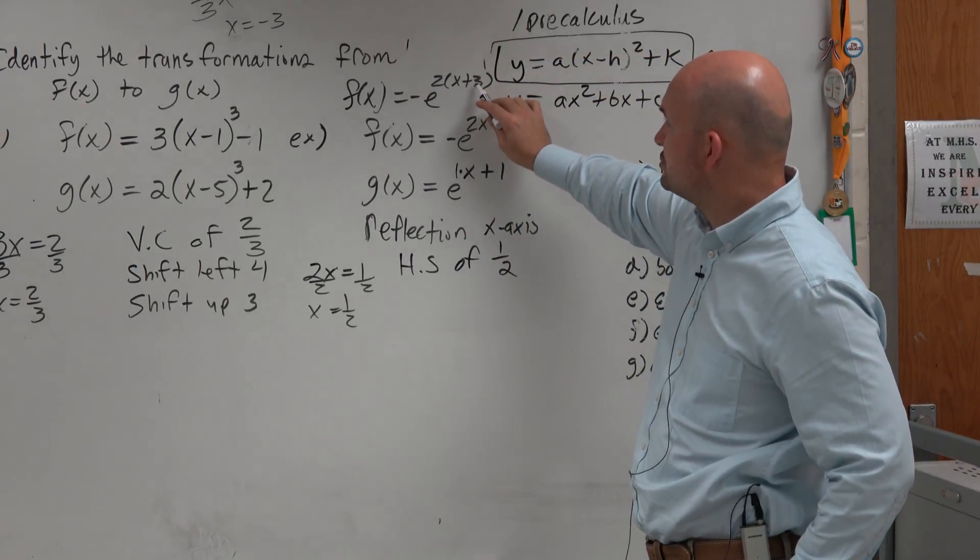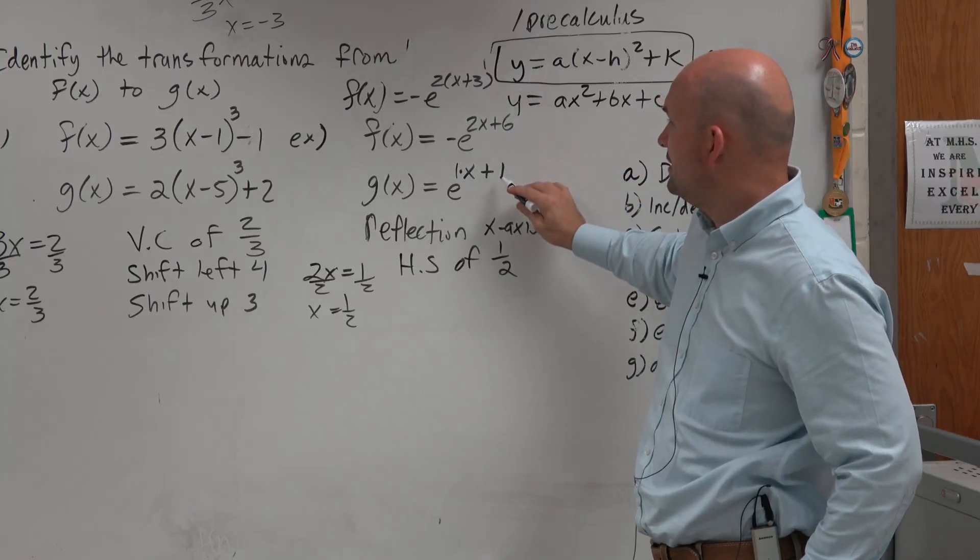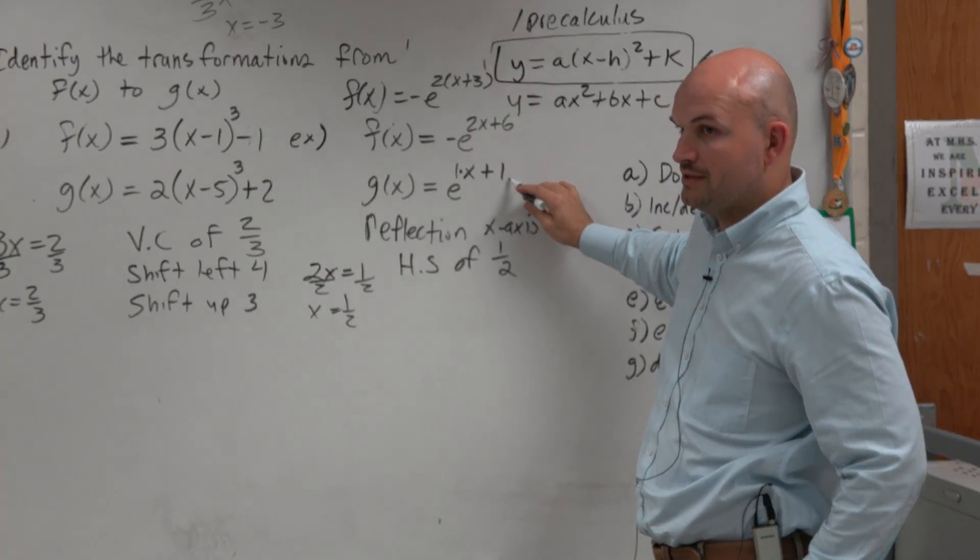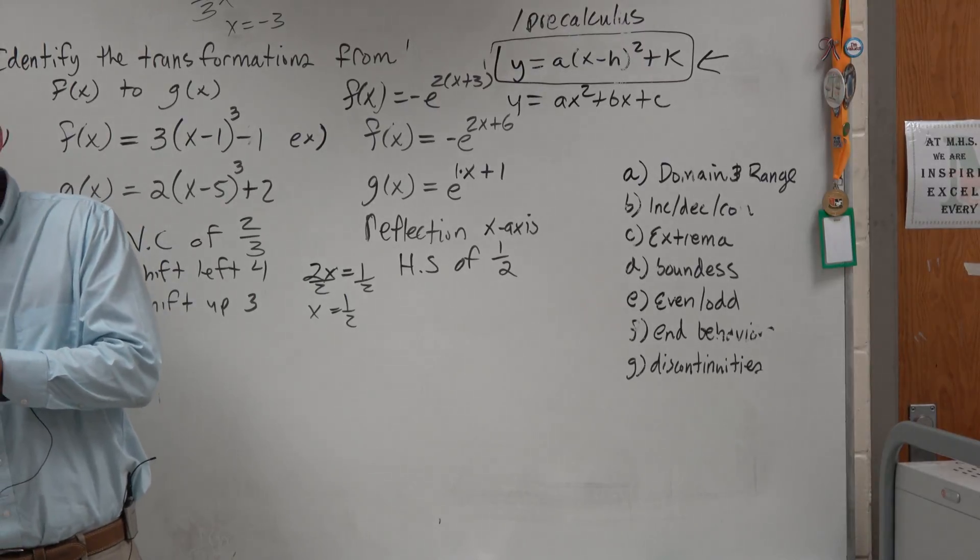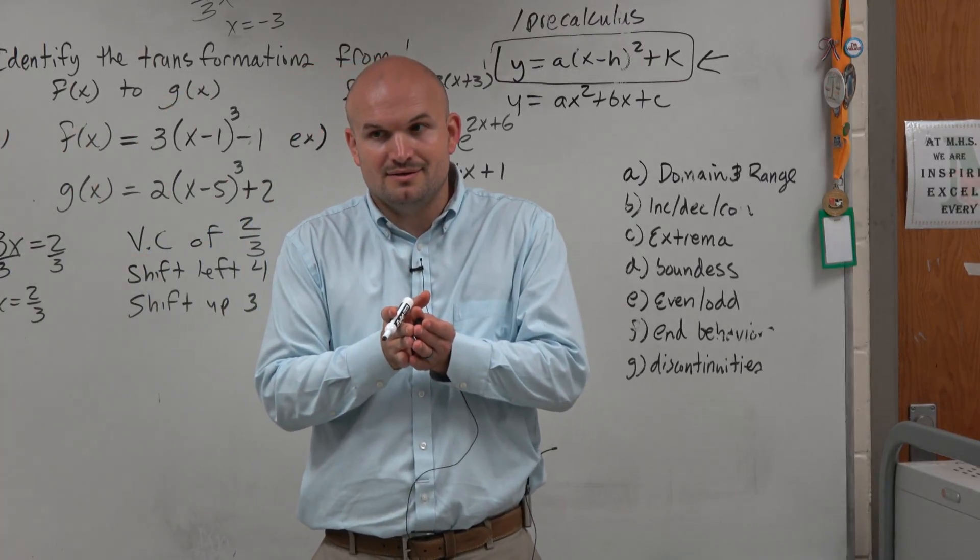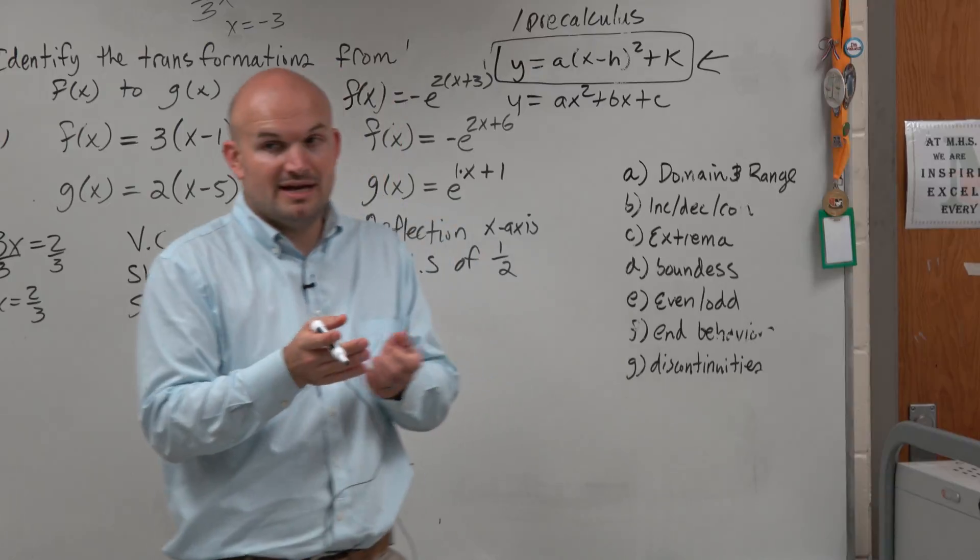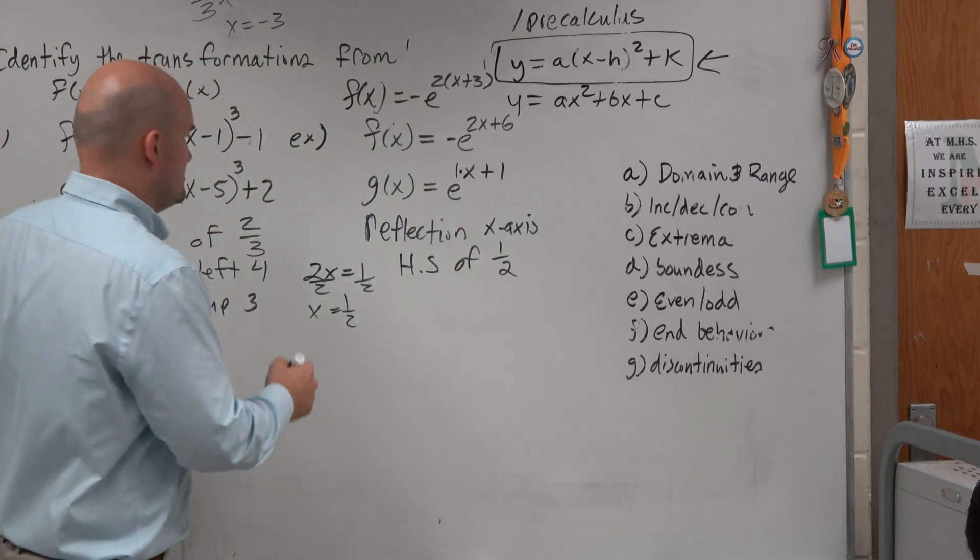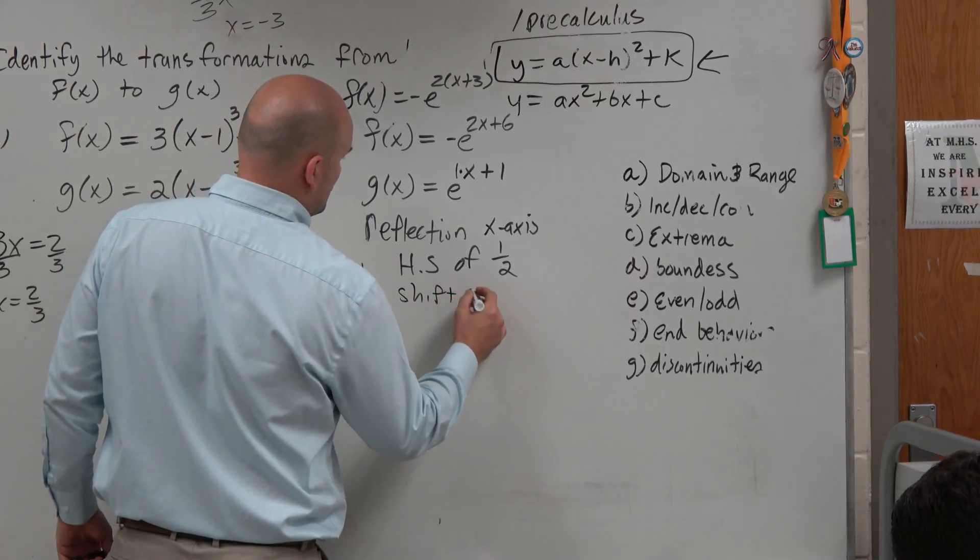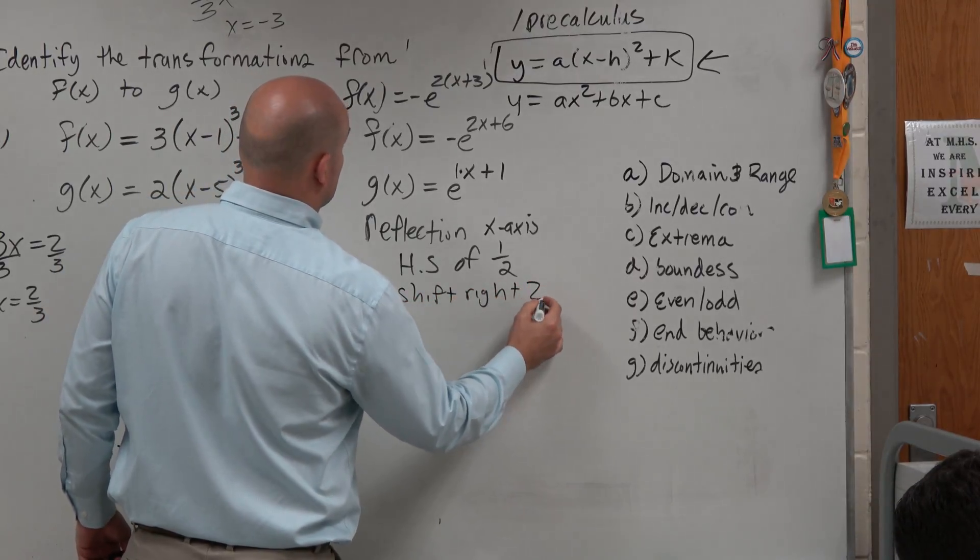And then you guys can see I'm shifting the graph left 3. And now, I'm only shifting the graph left 1. So if I shifted originally the graph left 3, but I need to be at left 1, then I need to go 2 units to the right. So therefore, I would say shift right 2.